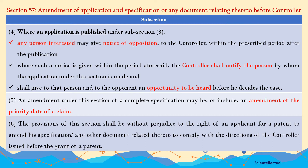Subsection 6: The provision of this section shall be without prejudice to the right of an applicant for a patent to amend his specification or related document to comply with the direction of the Controller issued before the grant of a patent. That is, before grant of patent, this will be done without prejudice to the right of an applicant.